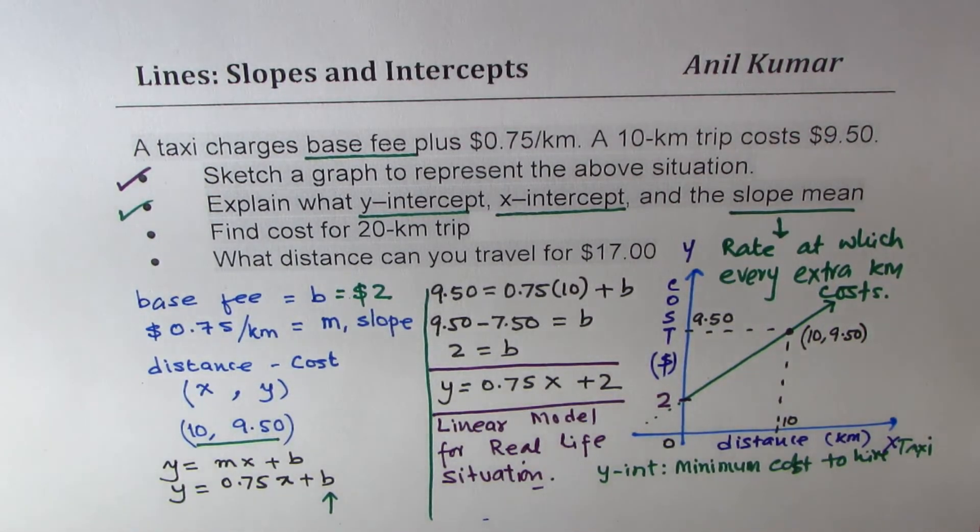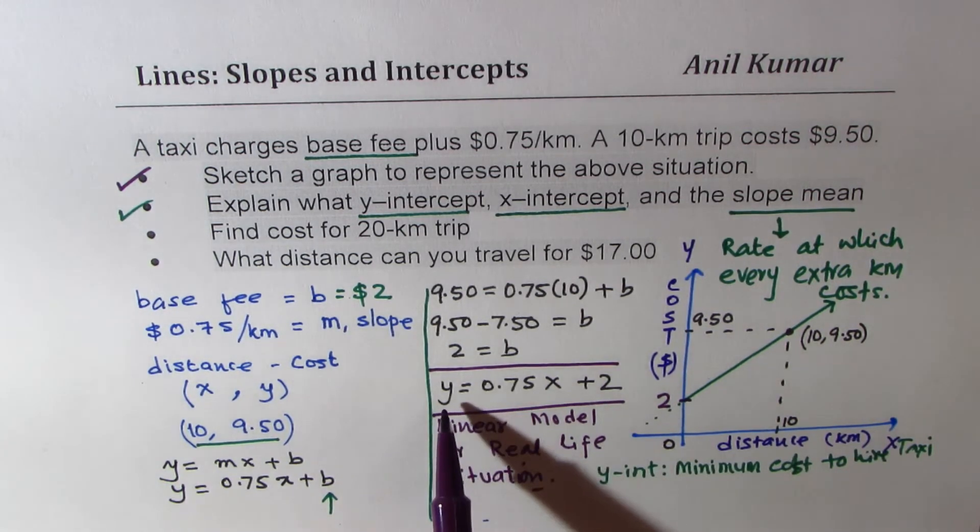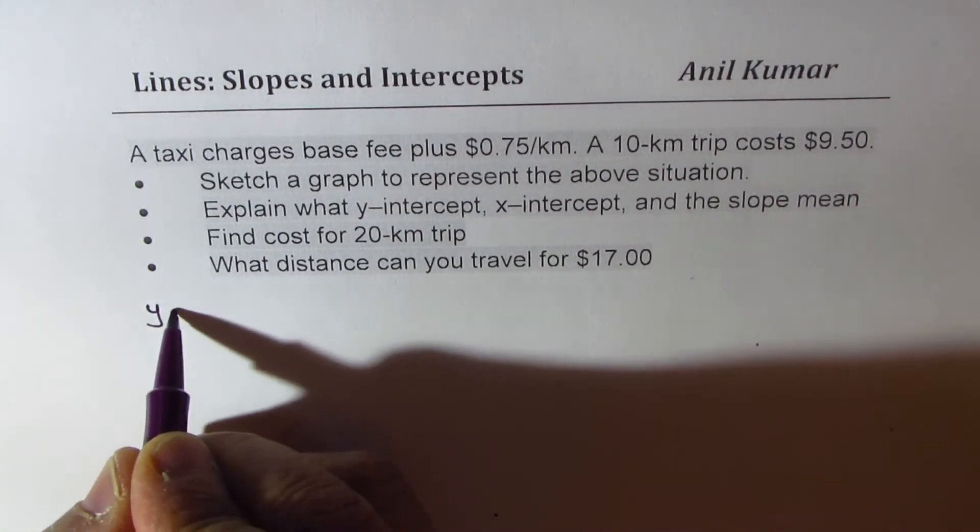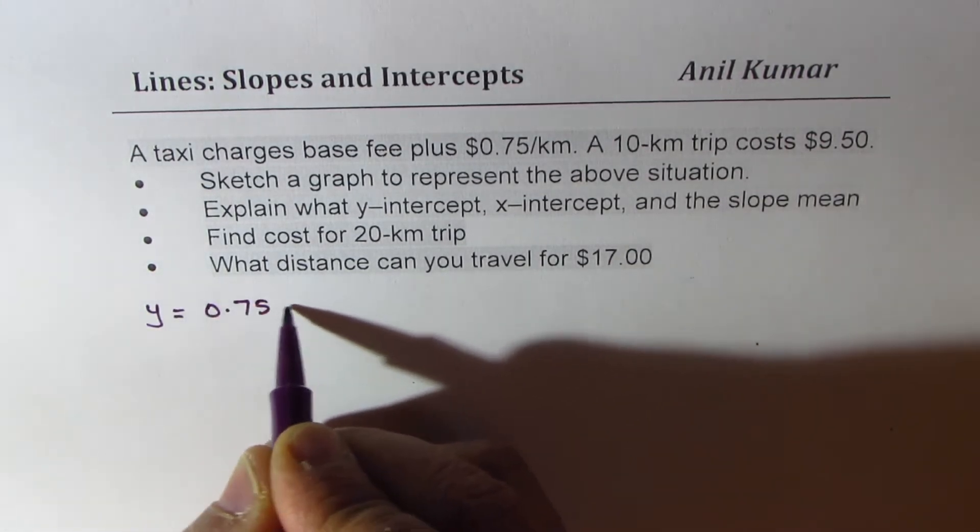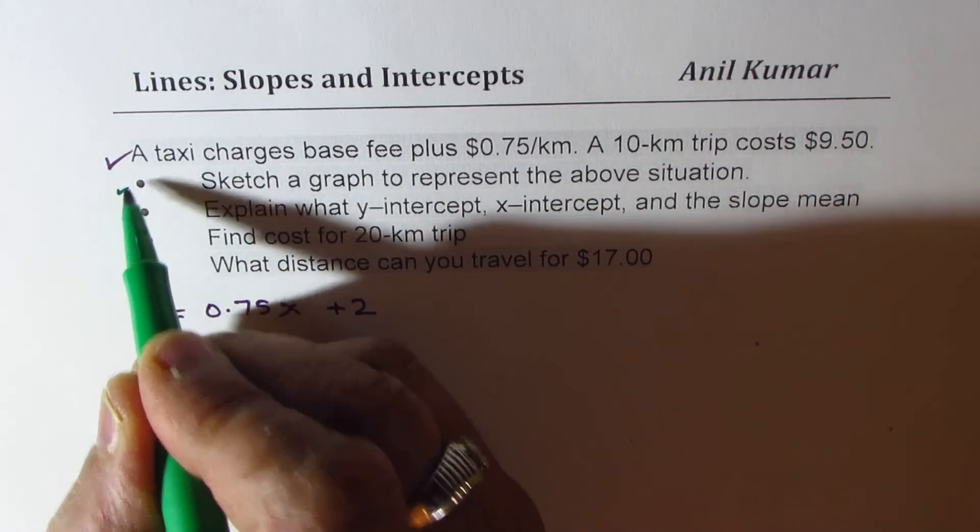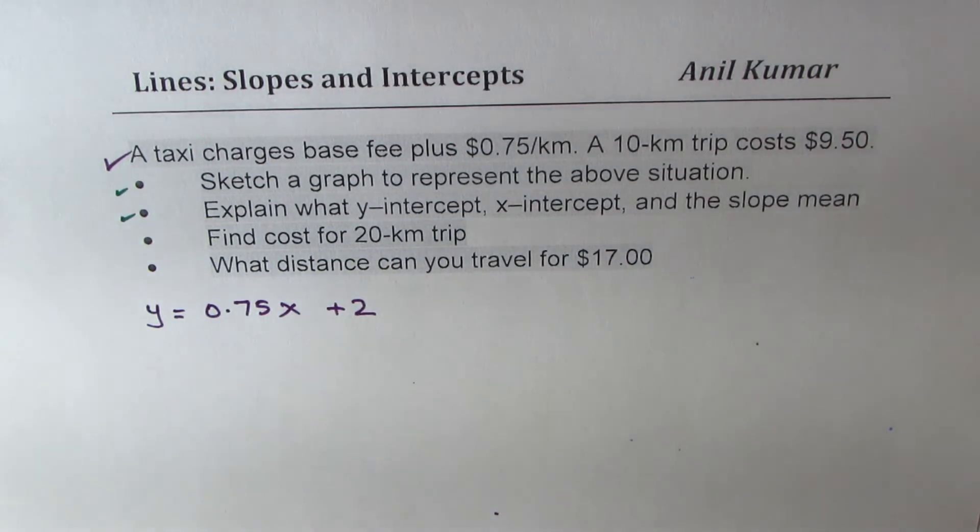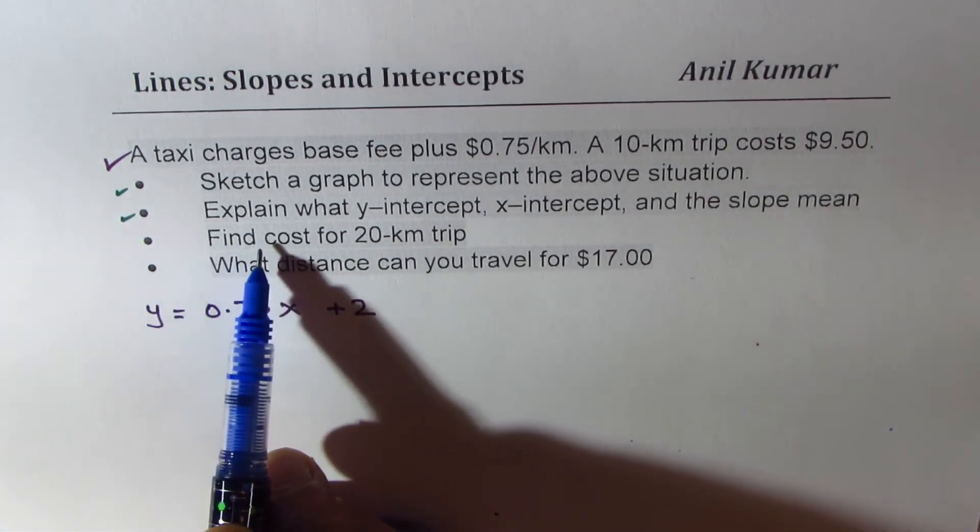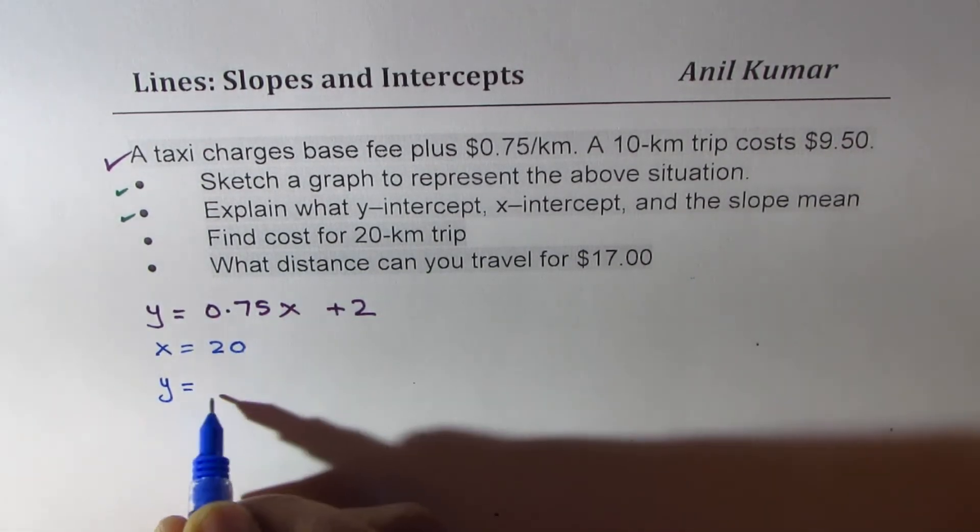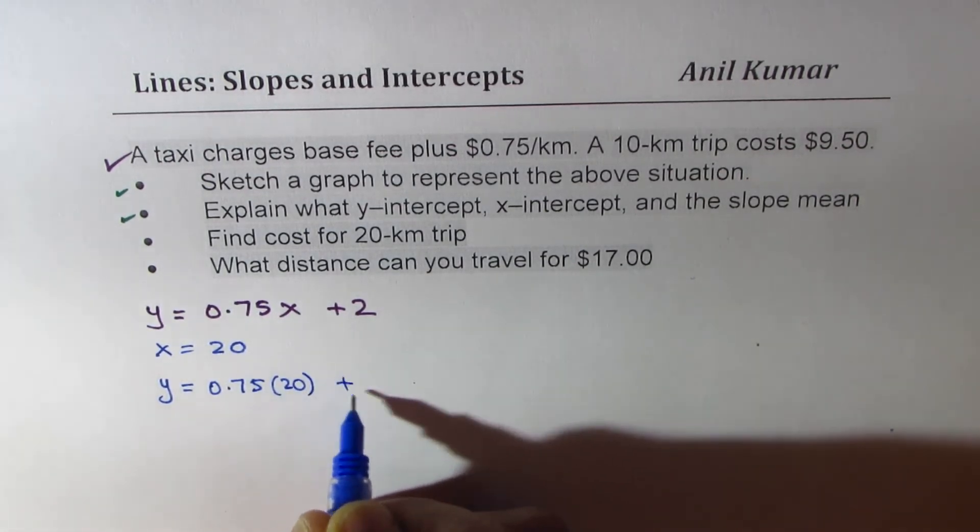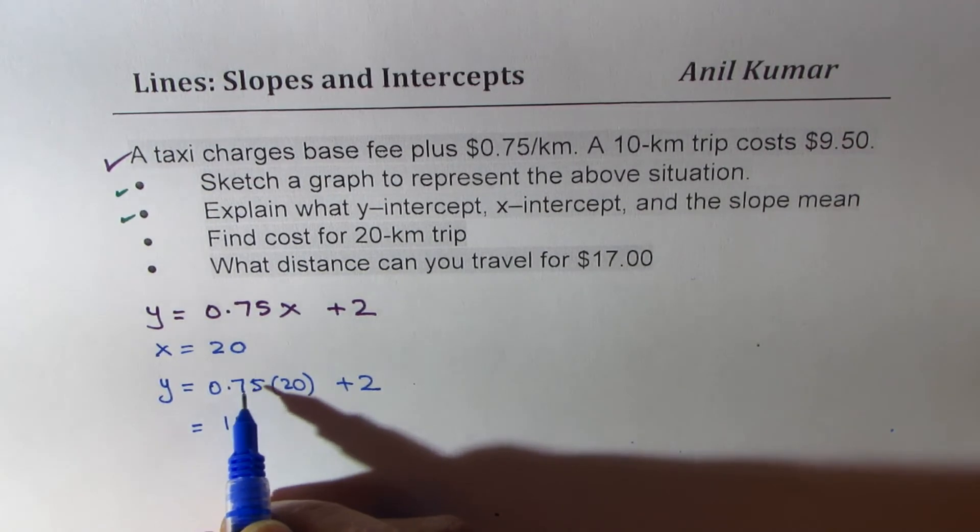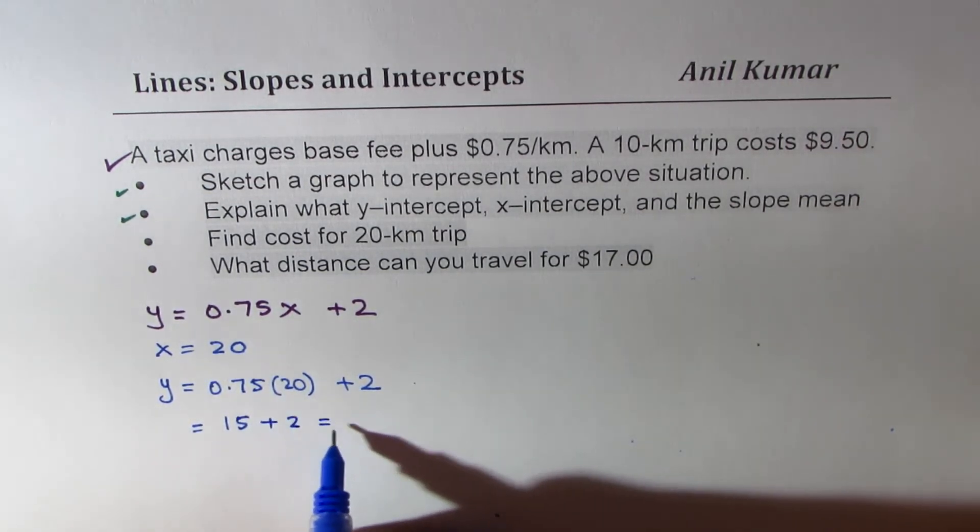Now, let's go to the next page and find the cost for a 20 kilometer trip. We just derived the linear model which was y = 0.75x + 2 for the given situation. Now, let us answer the third question which is find the cost for a 20 kilometer trip. So if x equals 20, we need to find what y is. Just substitute 20 here. We get 0.75 times 20 plus 2, and that gives me 15 plus 2 or $17.